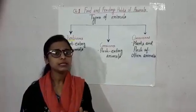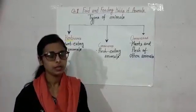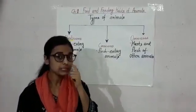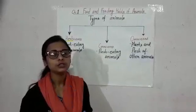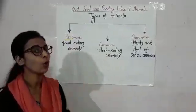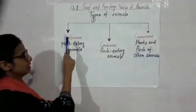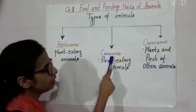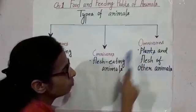Different animals eat different types of food. Based on their eating habits, animals have been divided into three groups. Let us see what are the three groups. These are herbivores, carnivores and omnivores.